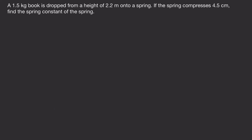In the next problem, a 1.5 kilogram book is dropped from a height of 2.2 meters onto a spring. If the spring compresses 4.5 centimeters, find the spring constant of the spring. So we have a book at time t1, and we're going to drop this book onto a spring on the ground.